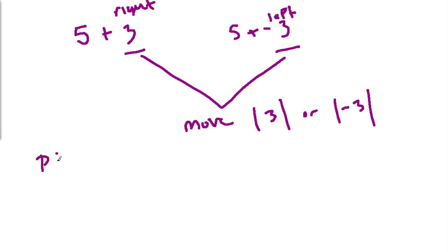So, we can make a statement using algebra, saying if you have p plus q, in this case, it was 5 plus 3, what it means is that you're going to move the absolute value of q.